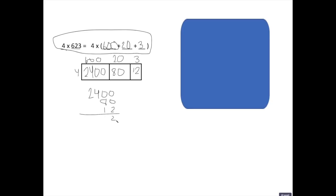0 plus 0 plus 2 equals 2. 0 plus 8 plus 1 equals 9. 4 and 2. 2,492. All right.